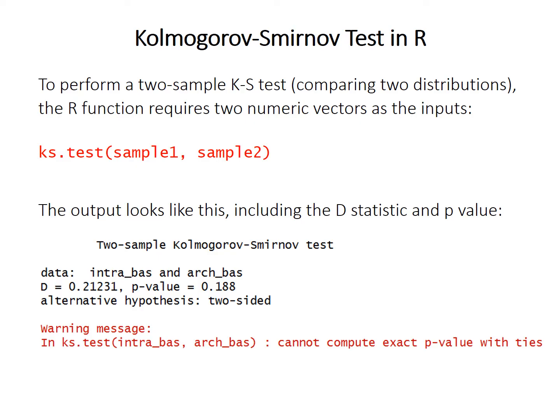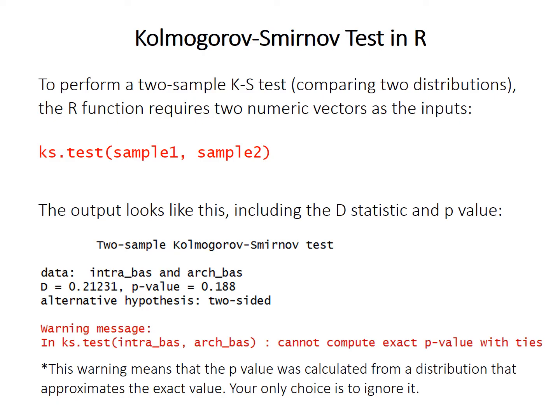The output gives you the D statistic and the p-value. You may also get a warning message if the sample has at least some values that are exactly the same — these are ties. If one of the data sets has the value 12 three times, that's a tie. In this case, R can't compute the exact p-value, so it estimates it from a distribution that approximates the true null expectation. There's not much you can do about this — your data is what it is. The p-value will be fine as long as you only have a few duplicate values. If you have many ties, you should be more cautious and read into this further.